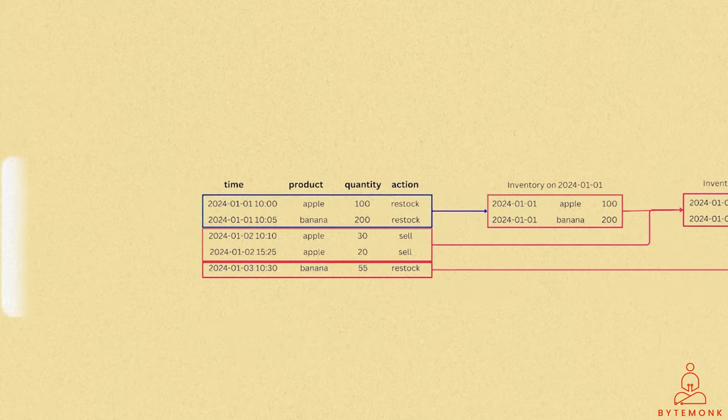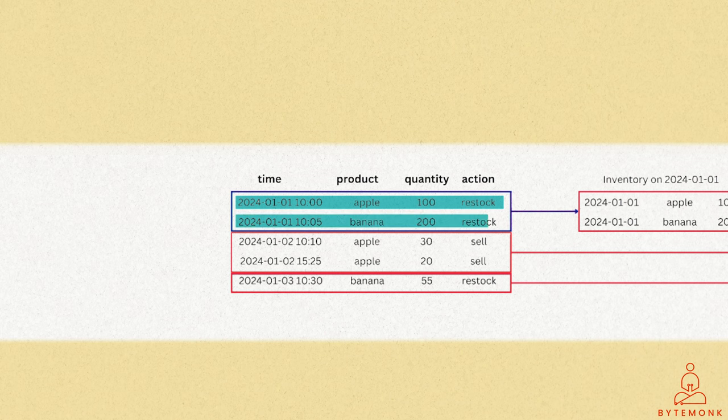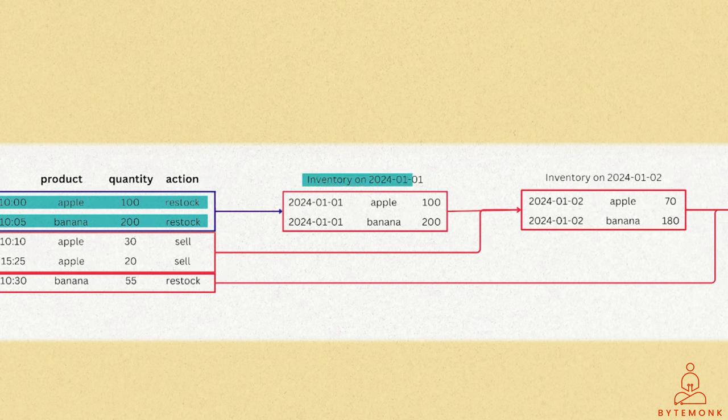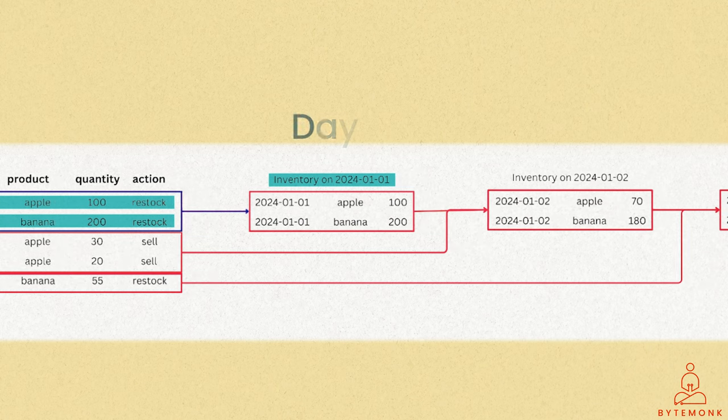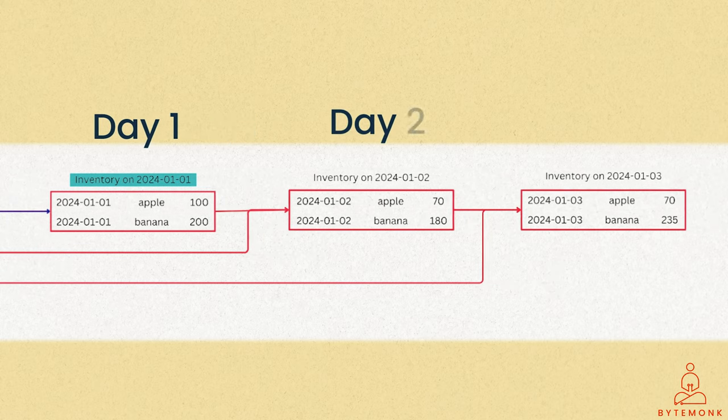Let's assume the shop opens on Jan 1st, 2024 and initially restocks 100 apples and 200 bananas. This initial stock serves as the inventory for Jan 1st, 2024. On the subsequent day, instead of aggregating events from two days, we merge the inventory from day 1 with the delta events from day 2.